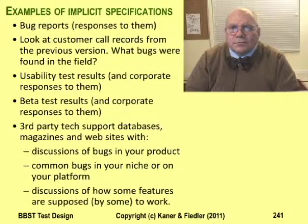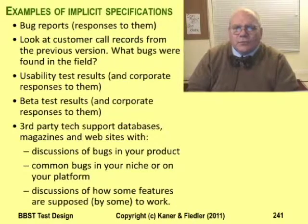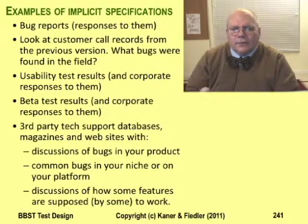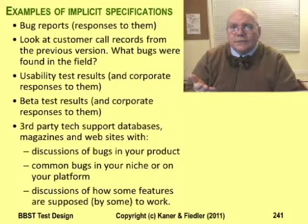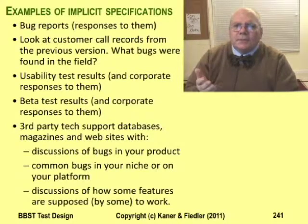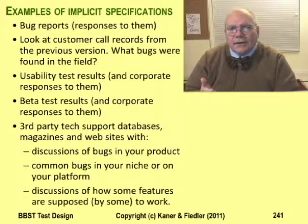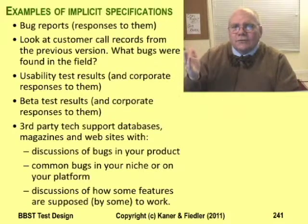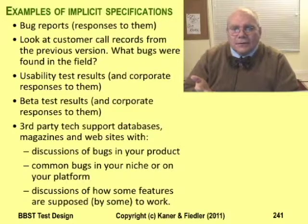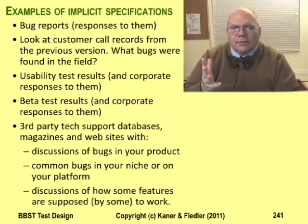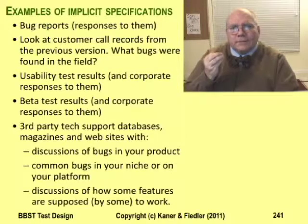Maintenance and support documents also provide useful implicit specs. Suppose someone reported a bug a year ago but it didn't get fixed, and you want it fixed now in the new version. What did the project manager say when she deferred the bug? Did she explain what was needed to fix it and promise to fix it next time? How many people complained? Did anyone stop using the product because of the bug, ask for a refund, write about it on the web, or did it get into a magazine? Did stakeholders with influence comment on it? You can quote any of this in your argument that it's time to fix the problem — it's not in the spec, but some people will find this information very credible.